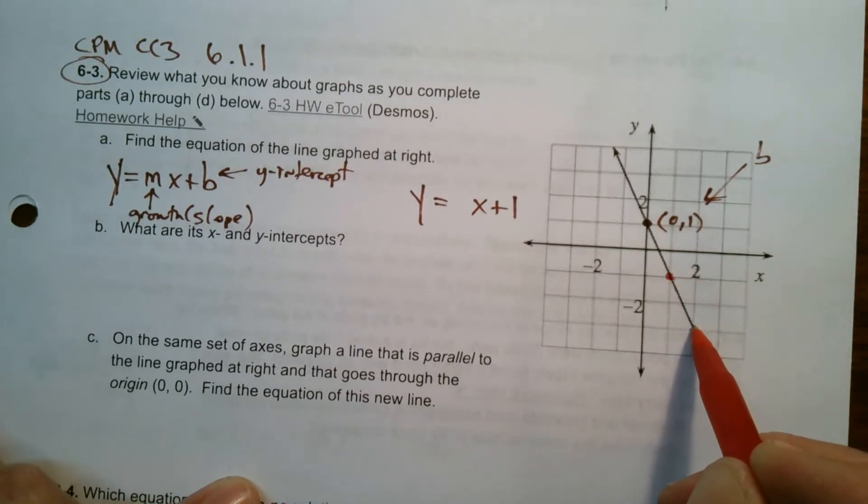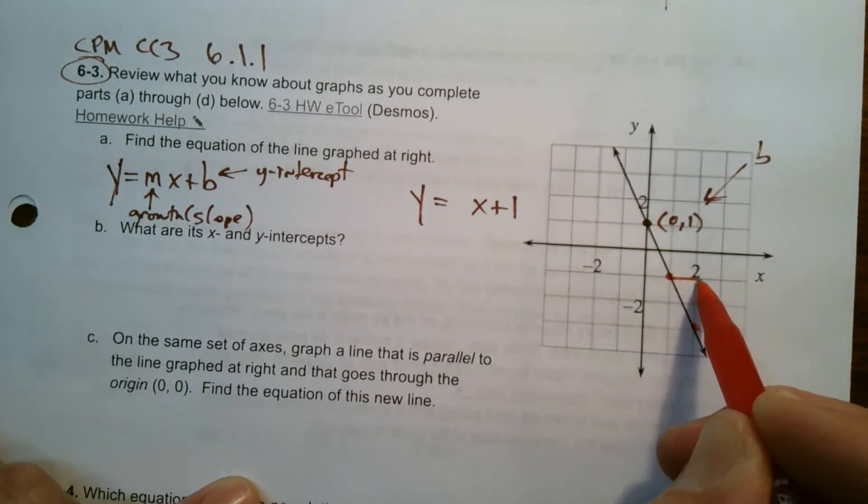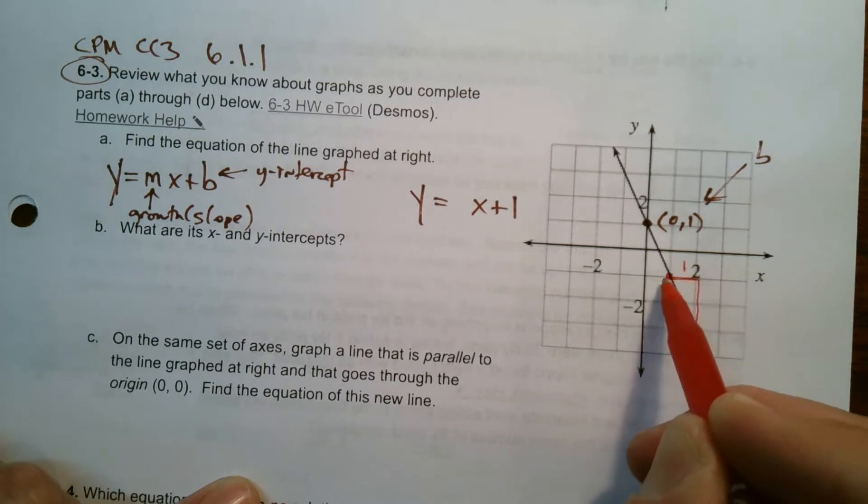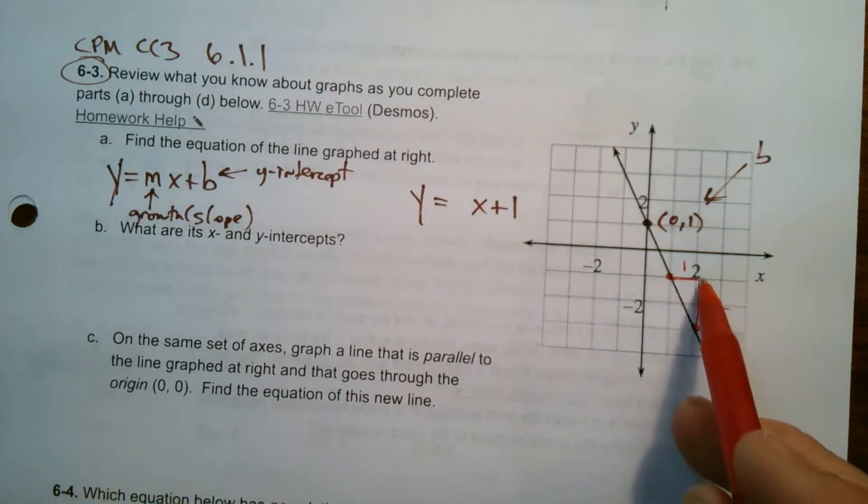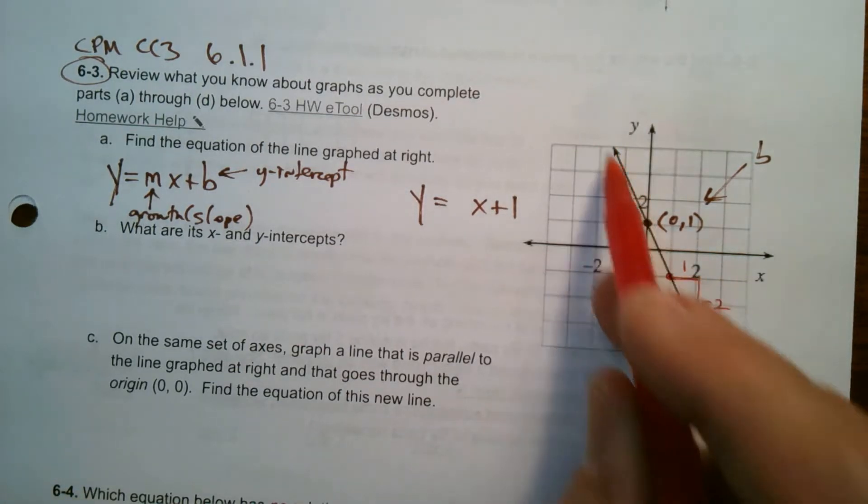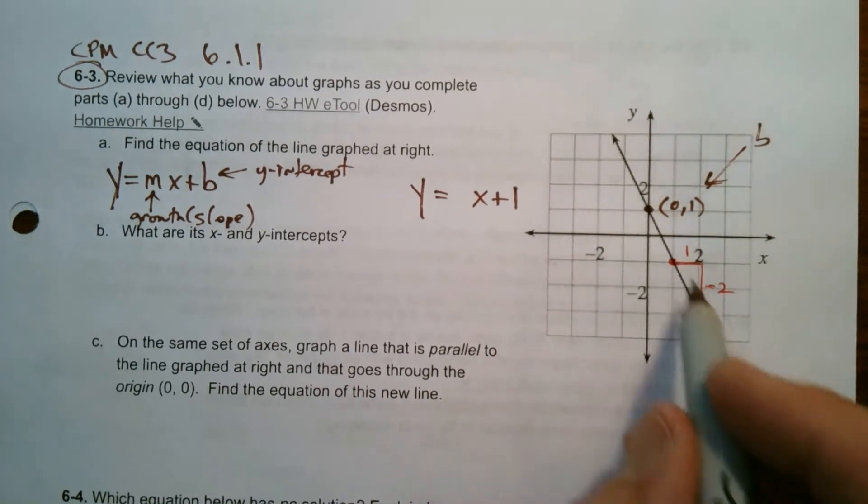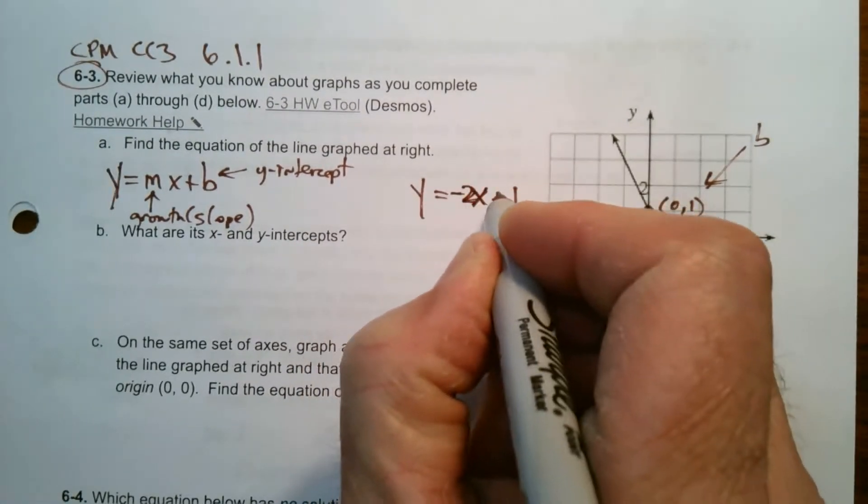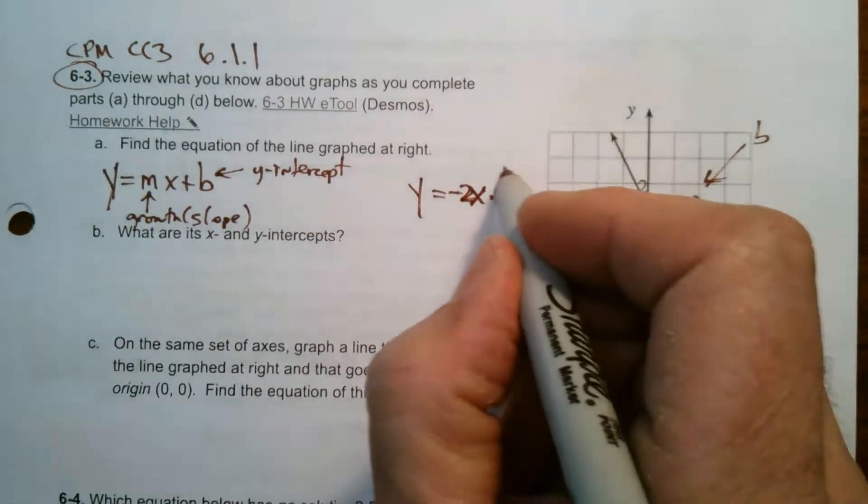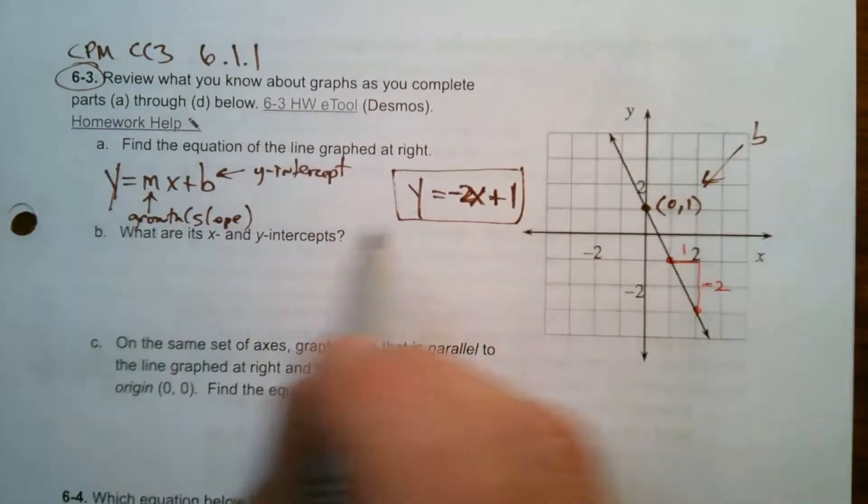Every time I go over 1, I go down. So my slope triangle, my growth shows me every 1 to the right, I go down 2. So that tells me it's a negative growth. When you're going down, you're decreasing. It's a negative growth. So it's going down 2. So it's negative 2x plus 1. So there's the equation. y is equal to negative 2x plus 1. That's part A.